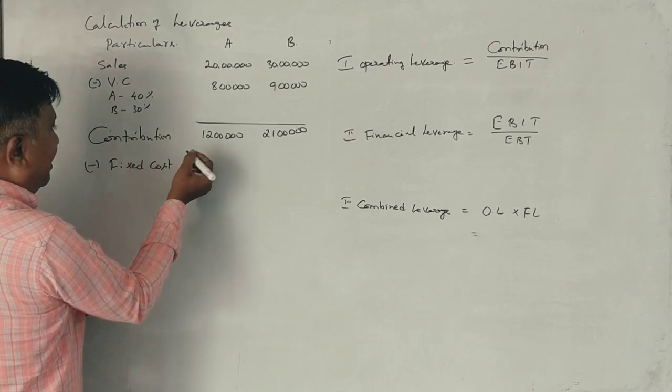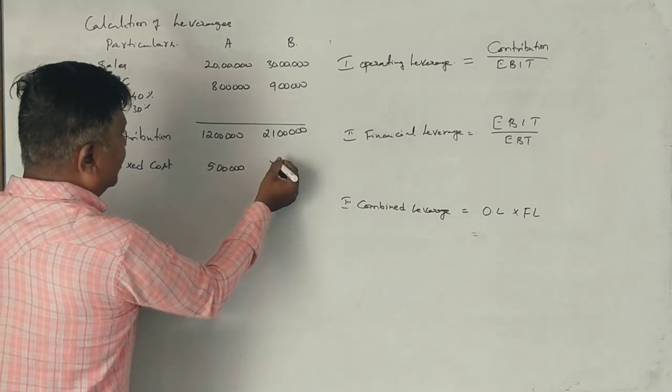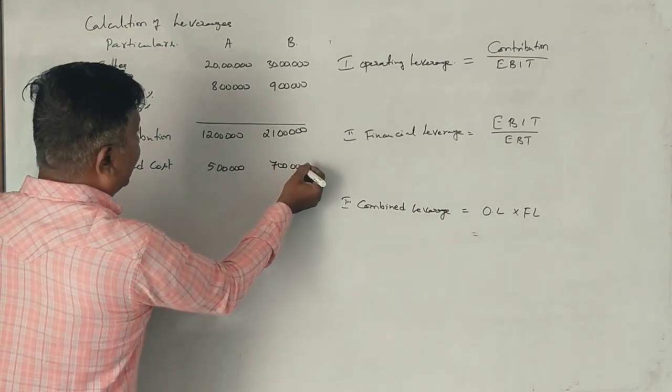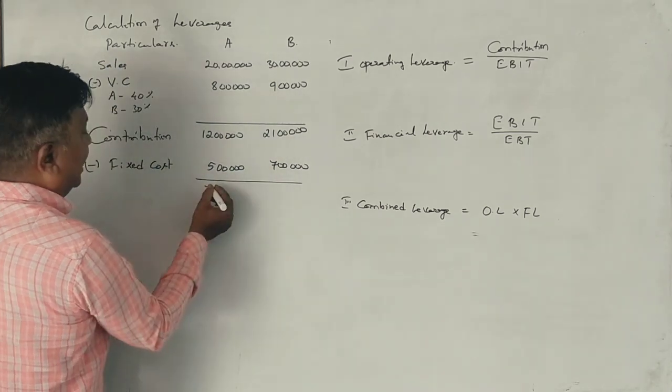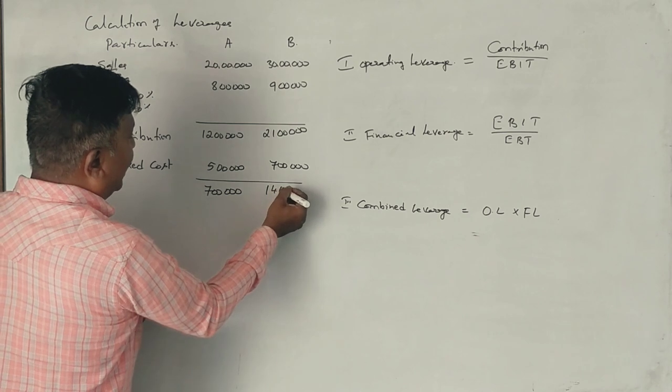Fixed cost: 5 lakhs and 7 lakhs. EBIT: 7 lakhs and 14 lakhs.